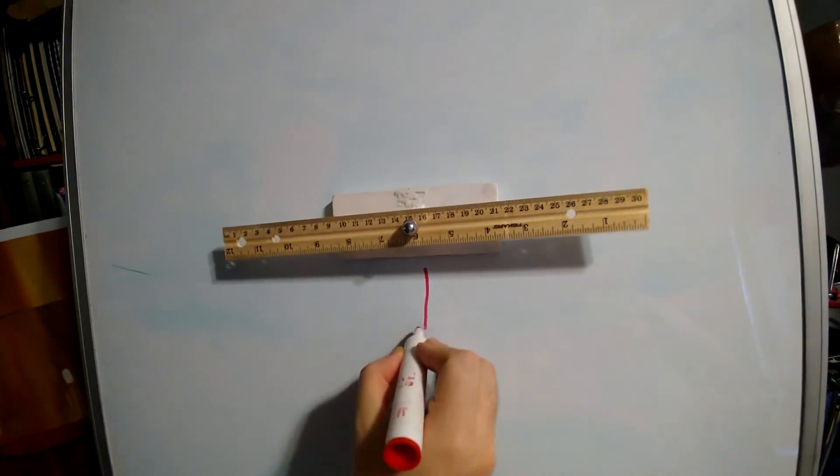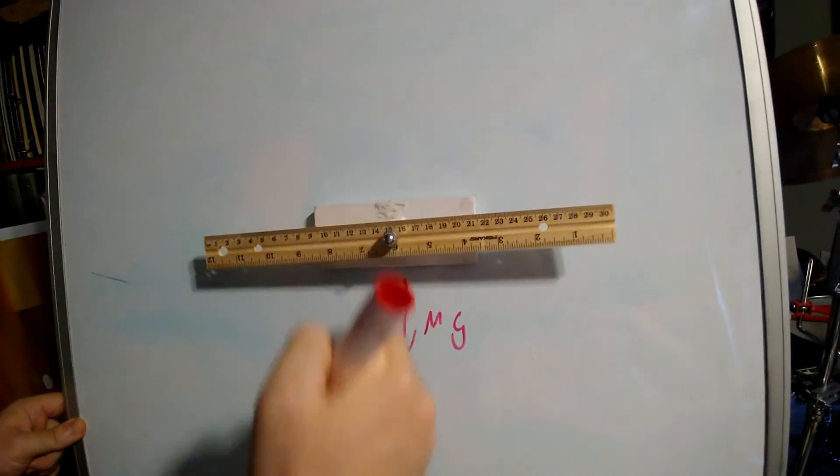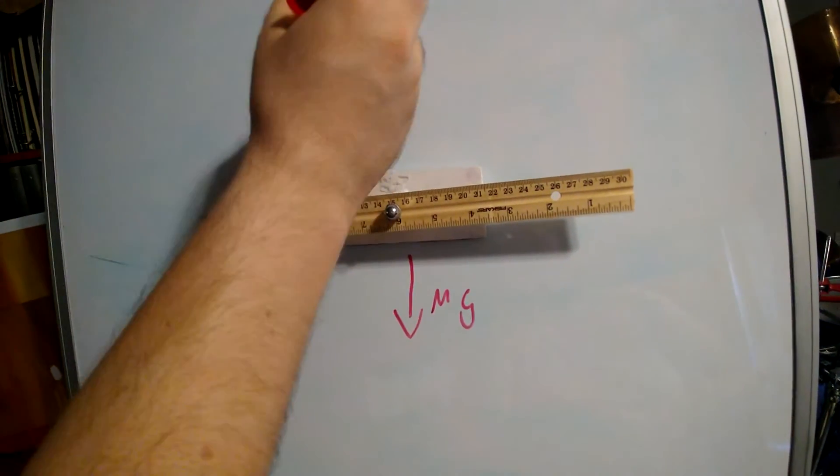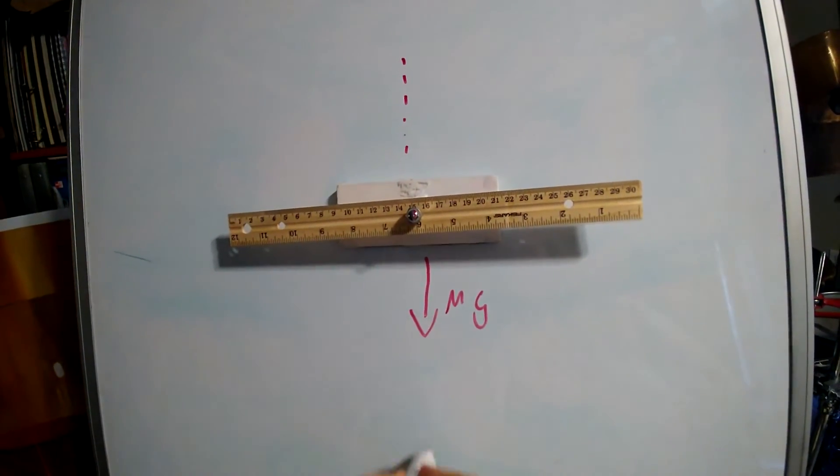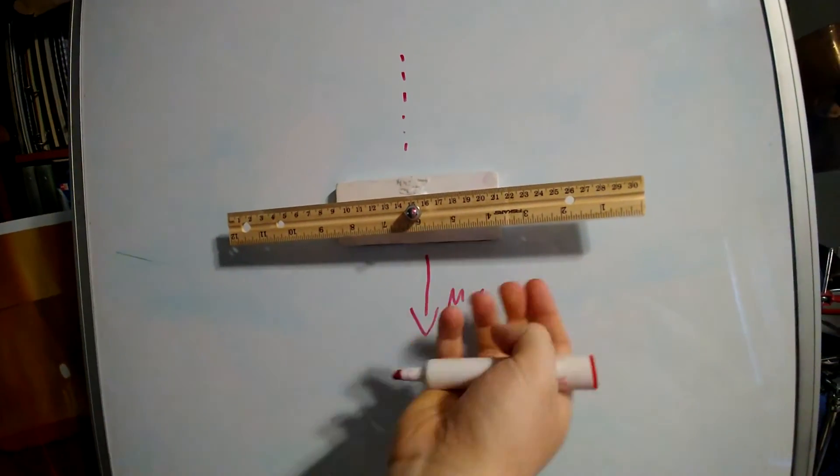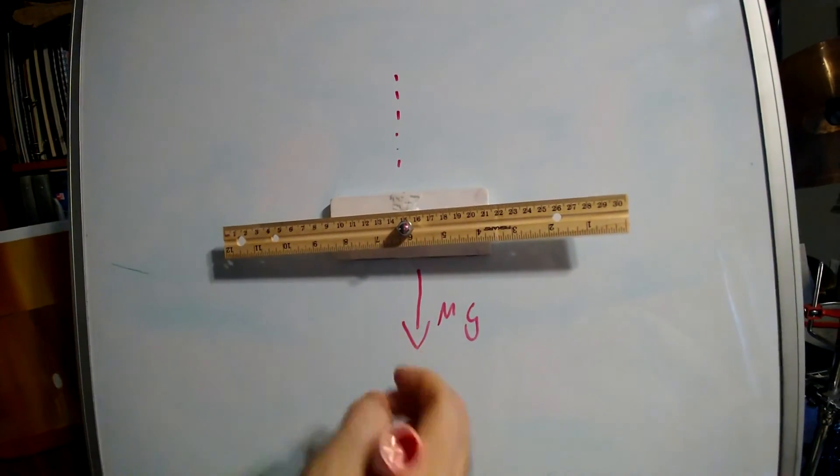Mg is going downwards. So this is mg. The effect of gravity is going downwards. The pivot is in the line of action of the force. So it makes no torque. It is supported by the pivot. The mass of this rod is supported by the pivot. But there is no torque.